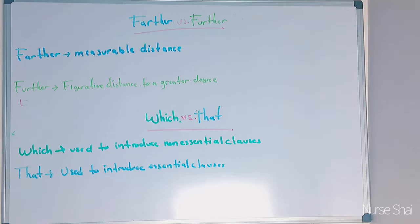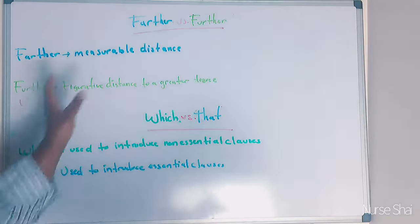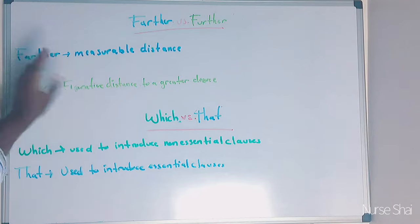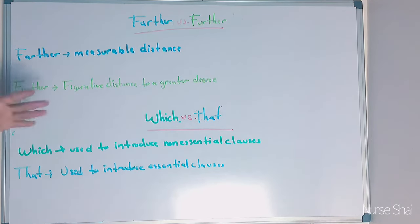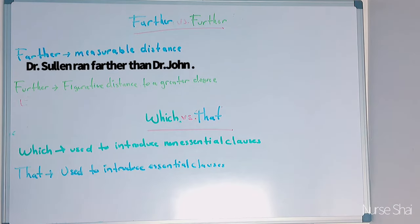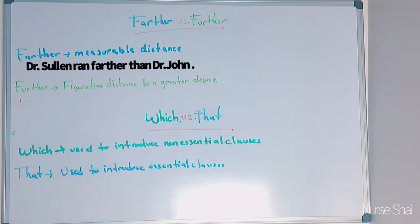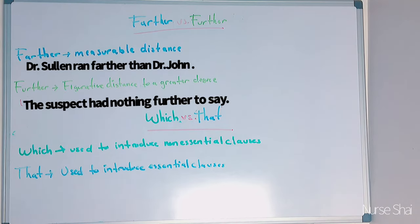Further versus farther: farther is a measurable distance, whereas further is not really measurable — it's a figurative distance of a greater degree. For example, farther would be 'Dr. Selen ran farther than Dr. John' because you can measure that distance. Whereas further: 'the suspect had nothing further to say' — there's nothing to measure it against.